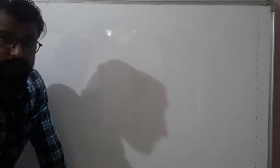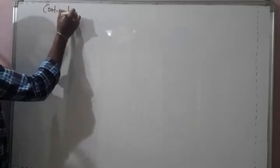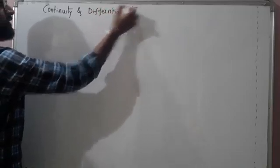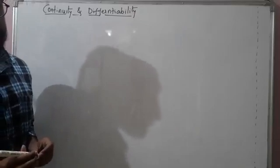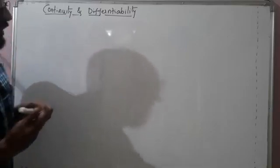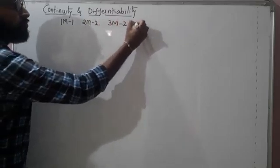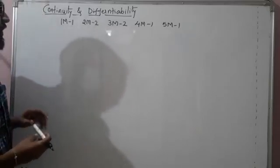Welcome to Ganesha's mathematics class. Today we are going to discuss the very important chapter of second PUC mathematics, that is continuity and differentiability. This chapter carries a lot of weightage both from a board perspective as well as a competitive exam perspective. For the board exam, this chapter carries a weightage of 20 marks: one mark one question, two mark two questions, three mark two questions, four mark one question, and five mark one question.